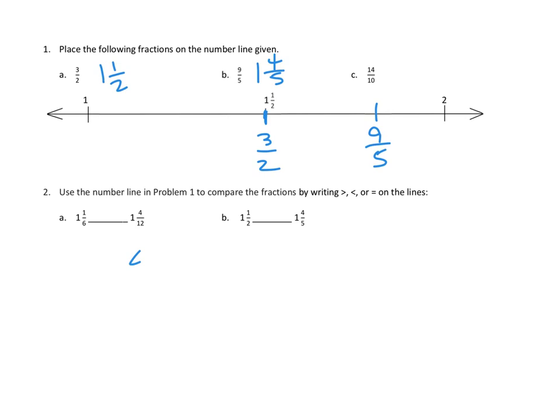So, let's see if we could do that. 1 and 4 twelfths. So, the 4 twelfths part, I could divide it by 2, but I think I can divide it by 4. Let's see if that works. 4 divided by 4 is 1, and 12 divided by 4 is 3. So, this is the same as 1 and 1 third. Awesome. Now, let's see if this makes it easier for us to compare.